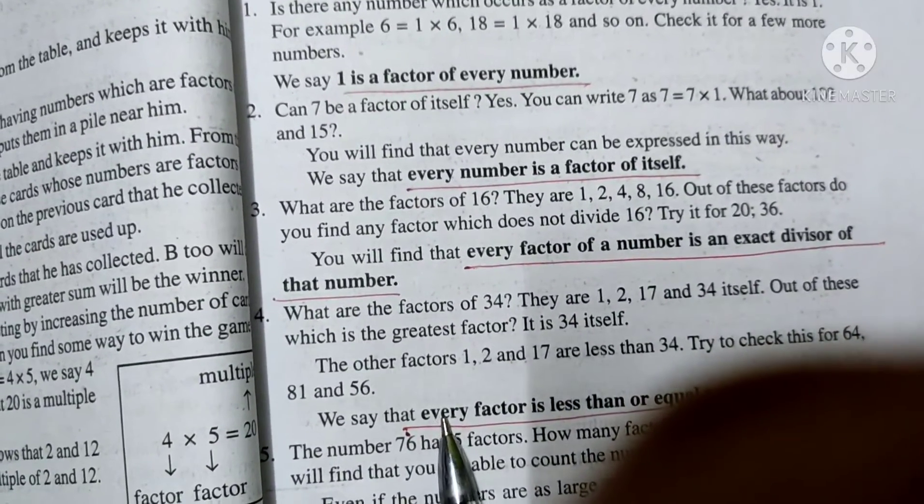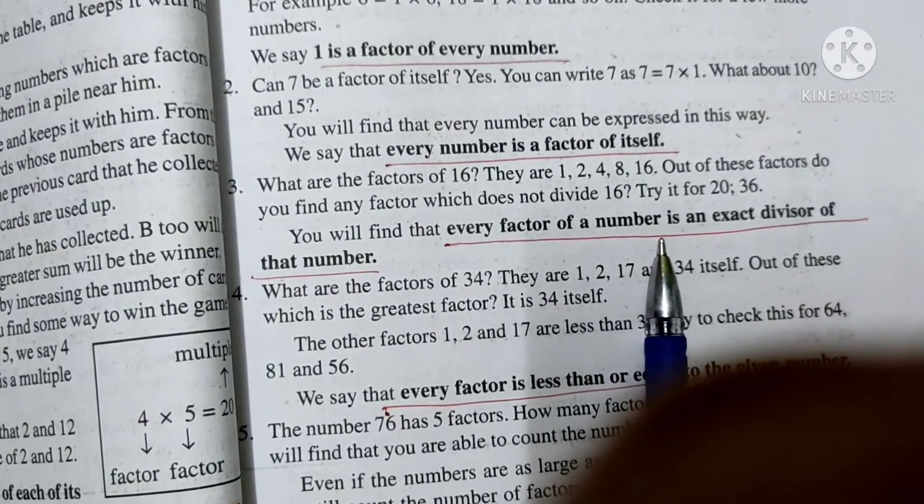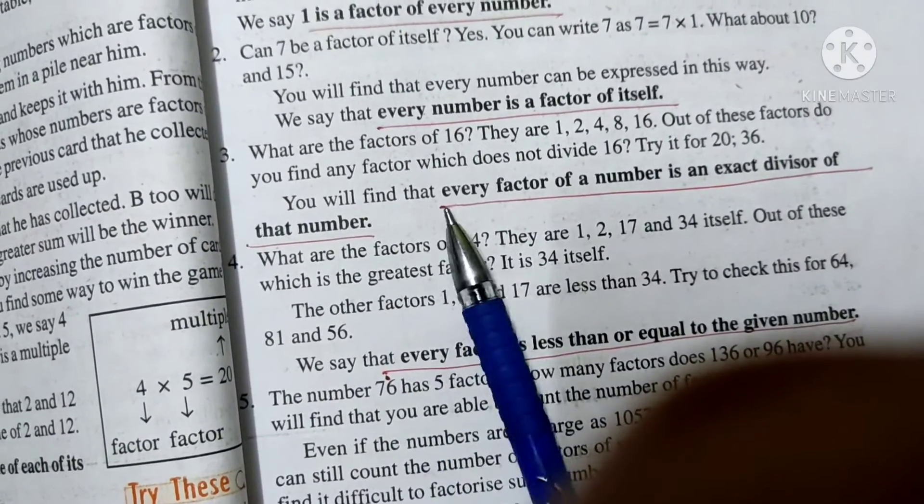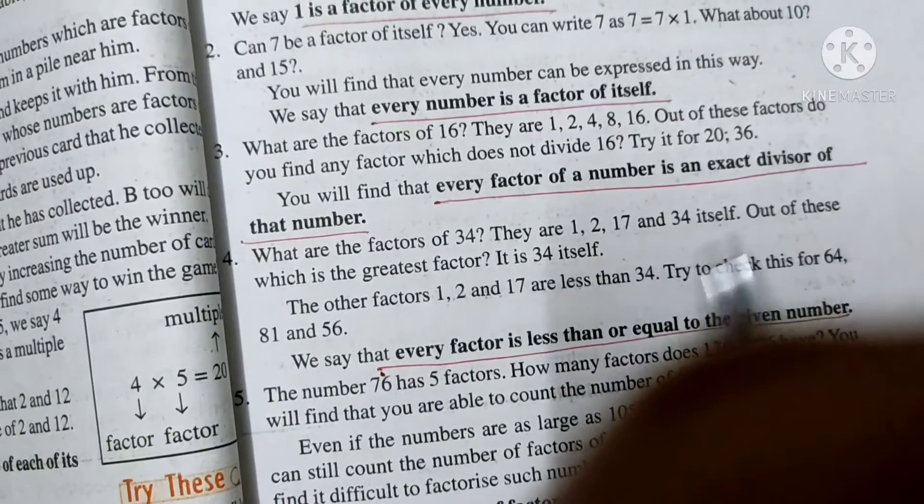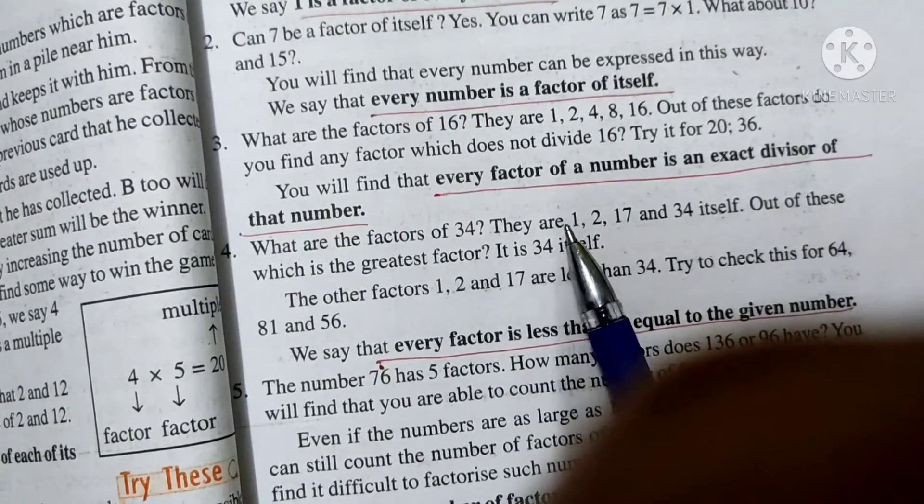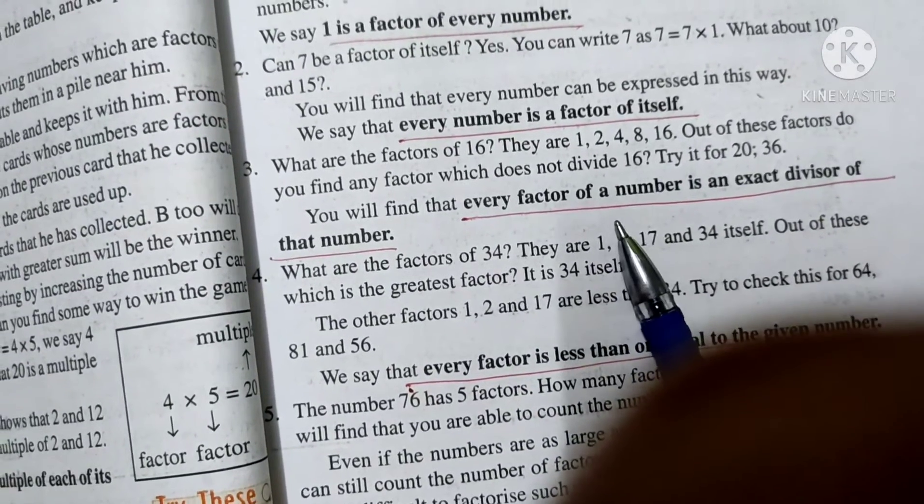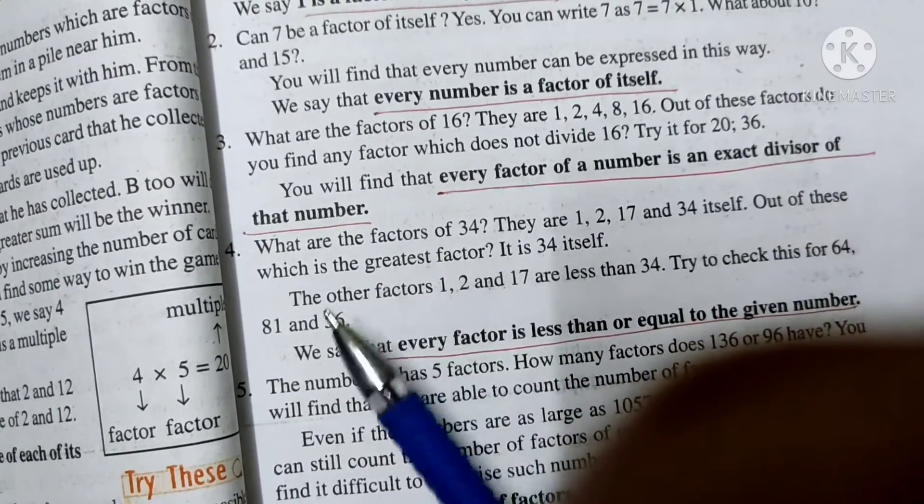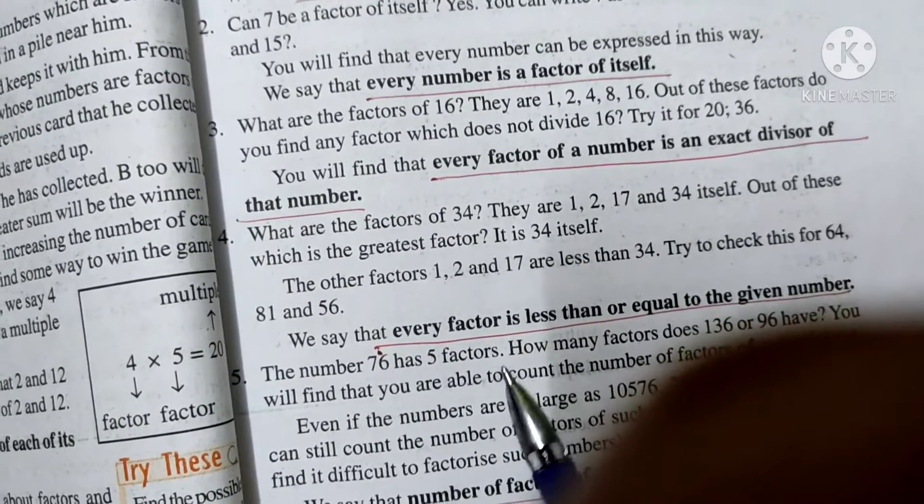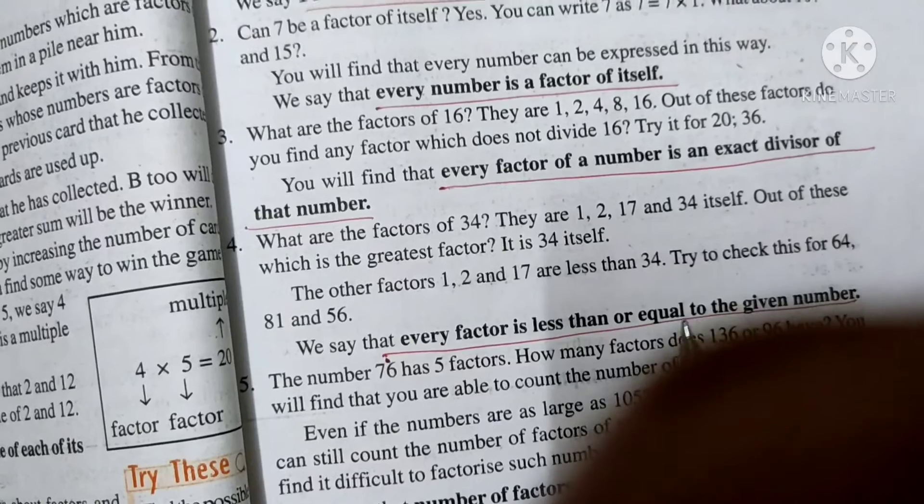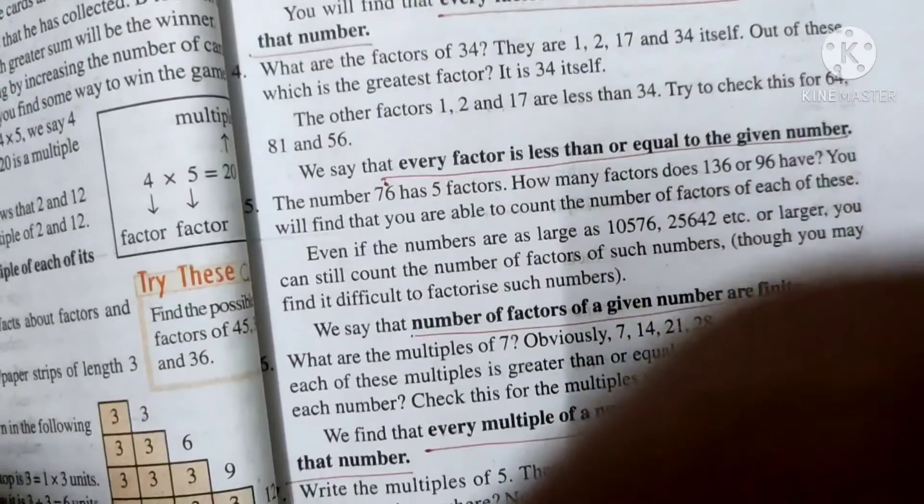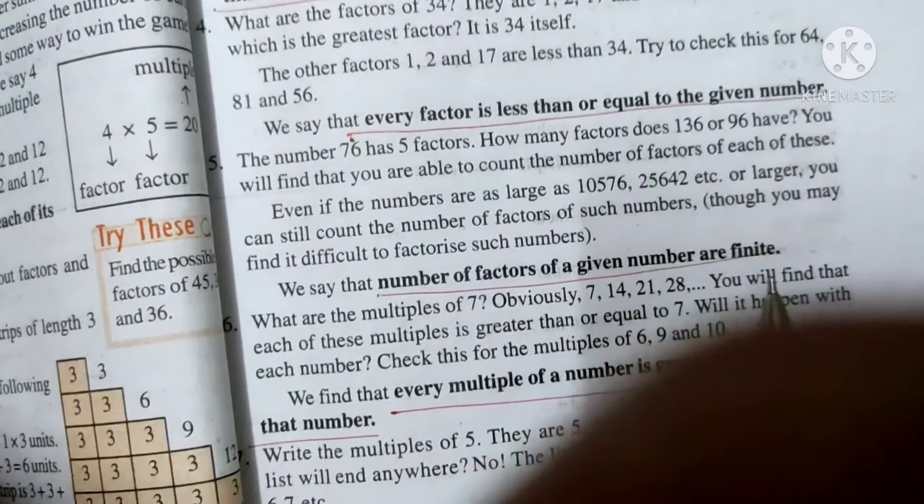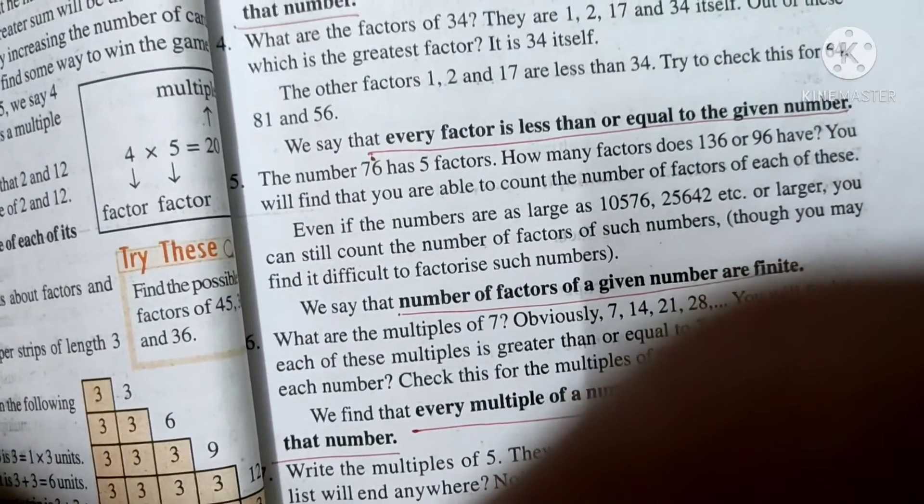Then the next point occurs - every factor of a number is an exact divisor of that number. Yes, of course, only then we say it is a factor. Every factor is less than or equal to the given number, as I told you earlier as well. Then, the most important thing is, number of factors of a given number are finite.